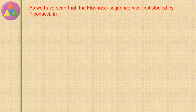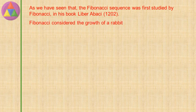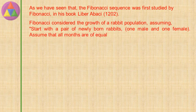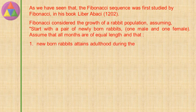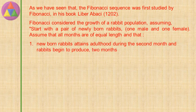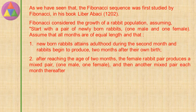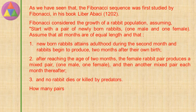The Fibonacci sequence was first studied by Fibonacci in his book Liber Abaci during the year 1202. Fibonacci considered the growth of a rabbit population, assuming: start with a pair of newly born rabbits — one male and one female. All months are of equal length. Newborn rabbits attain adulthood during the second month and begin to produce two months after their own birth. After reaching the age of two months, the female rabbit pair produces a mixed pair (one male, one female), and then another mixed pair each month thereafter. No rabbit dies or is killed by predators. How many pairs of rabbits will there be after one year, or at the end of the 12th month?